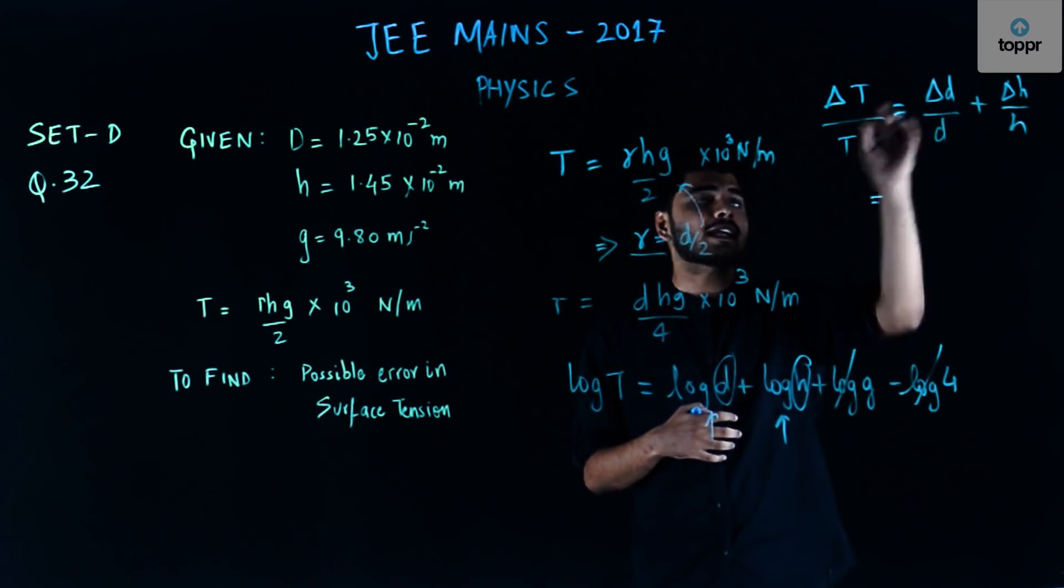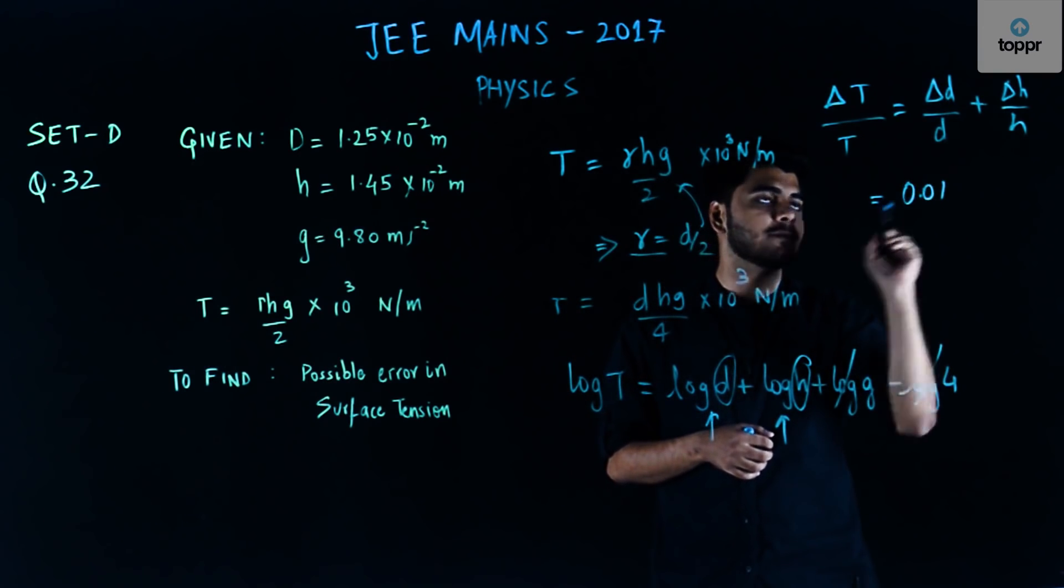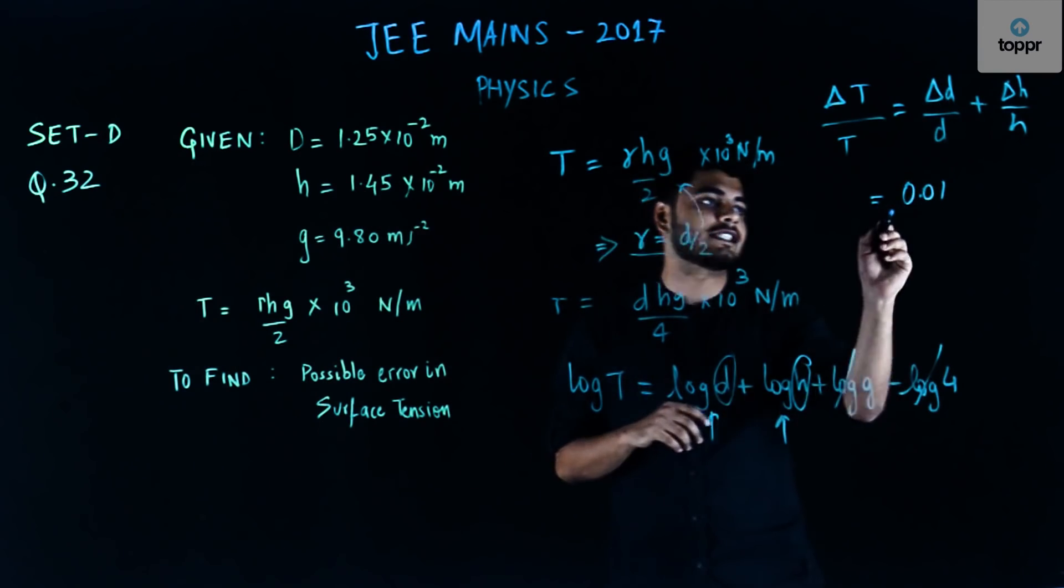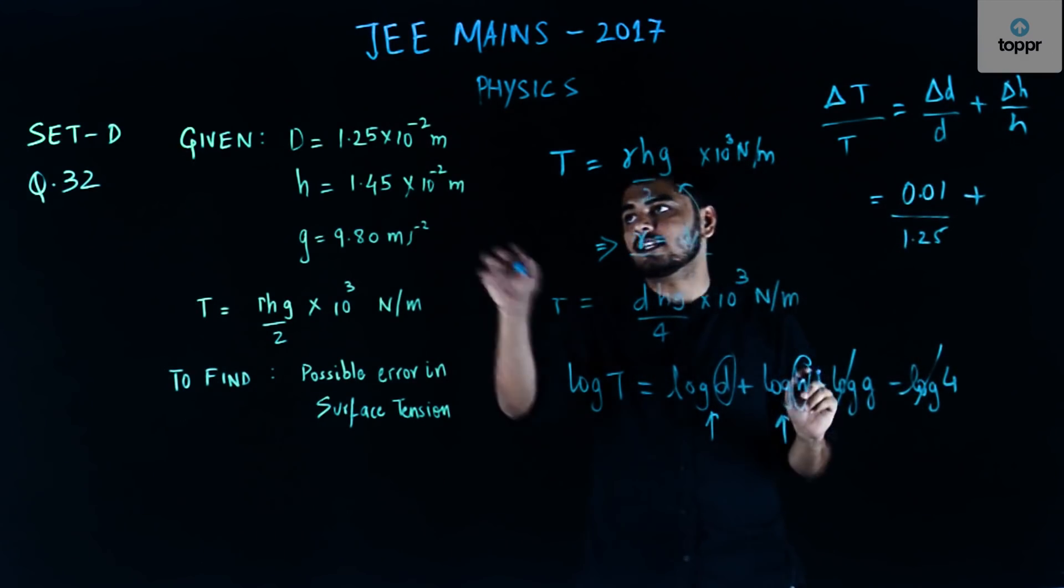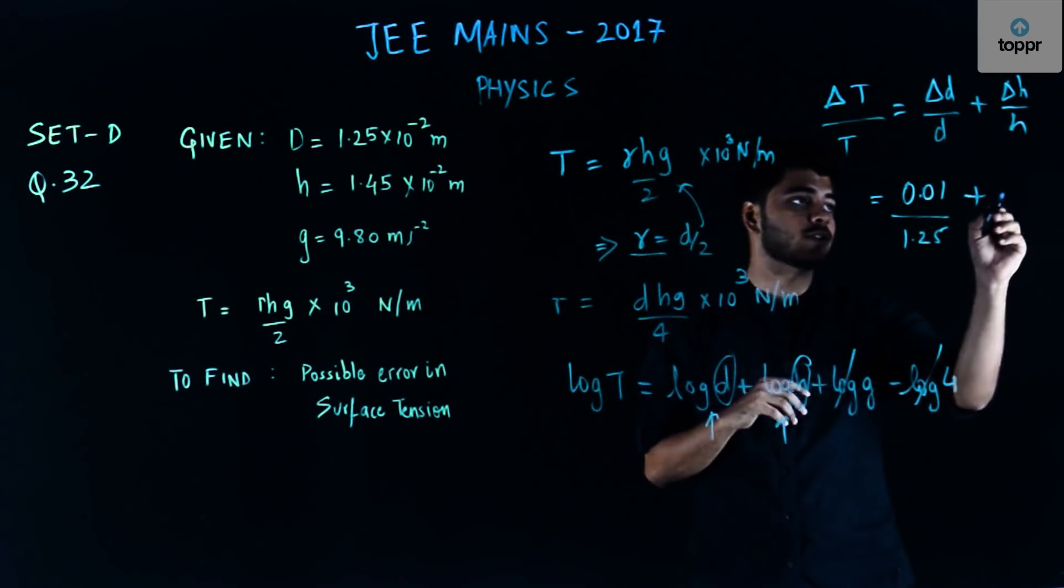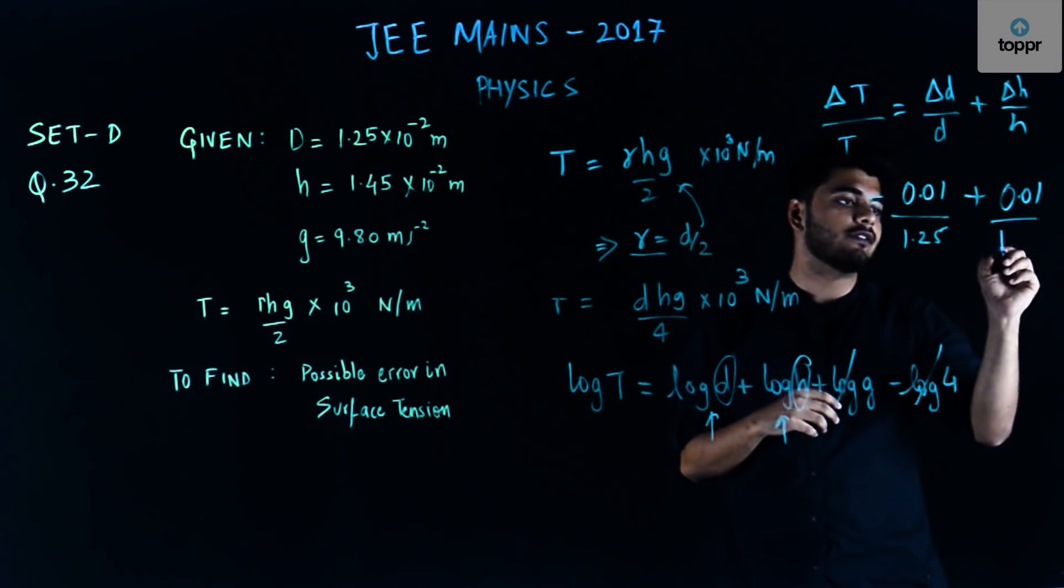Now my maximum value of delta D can be nothing but equals to 0.01 and the value of D is nothing but 1.25. Here my value of delta H also can maximum be equals to 0.01 and my H value is given to be 1.45.